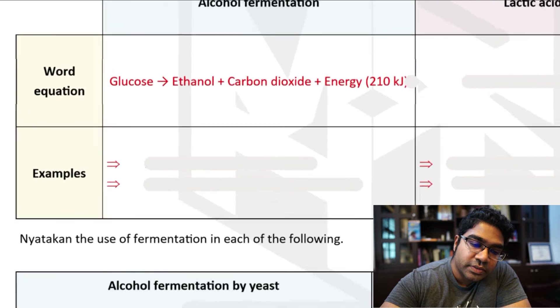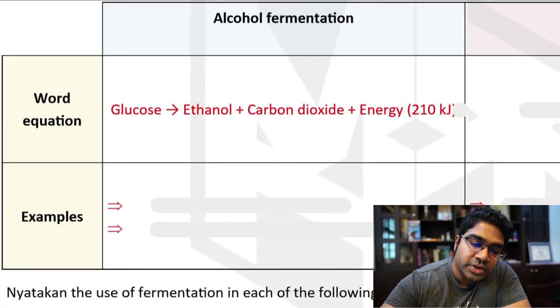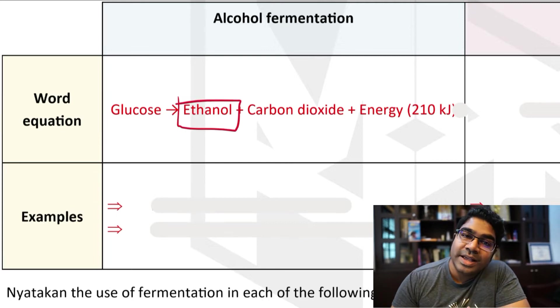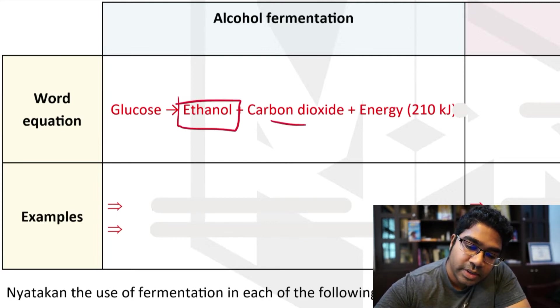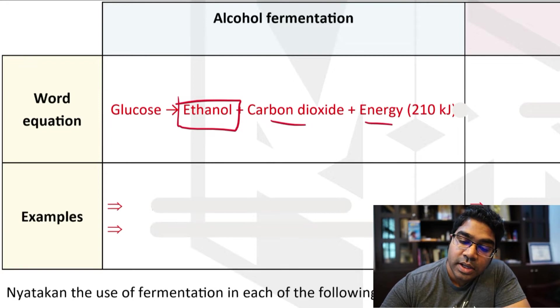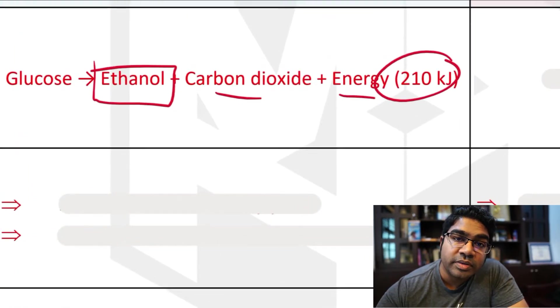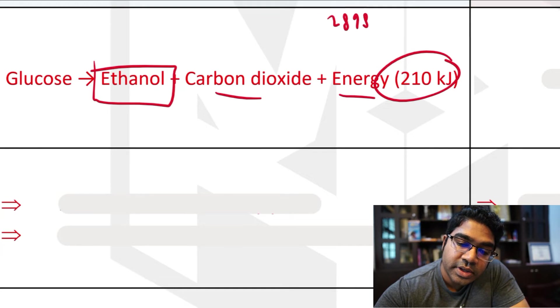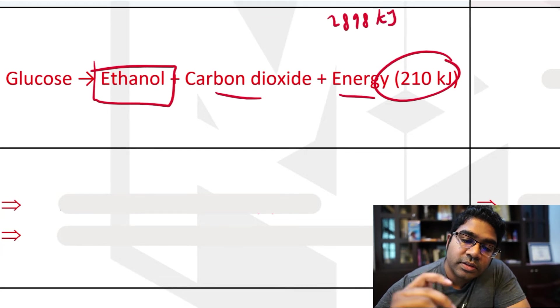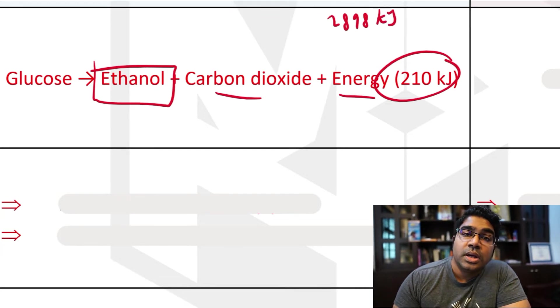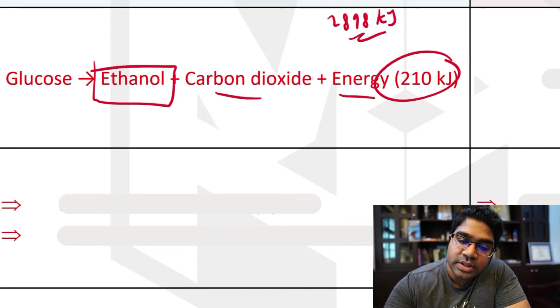This is the word equation for alcohol fermentation. In alcohol fermentation, ethanol is produced which is the alcohol, and then we have carbon dioxide and energy. The energy produced here is 210 kilojoules as compared to the energy produced by aerobic respiration which is 2898 kilojoules. You can see why aerobic respiration is usually preferred because it releases much more energy compared to alcohol fermentation.